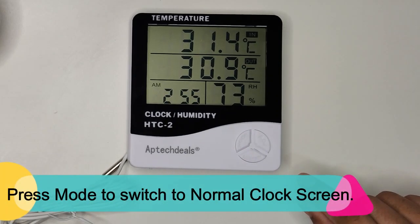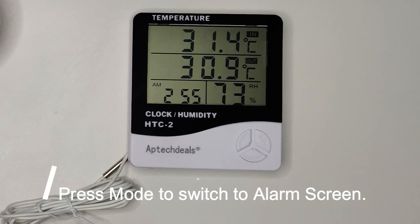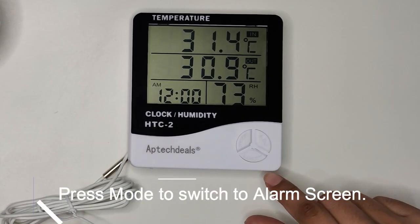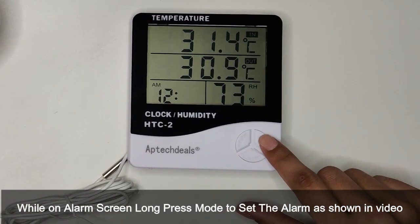Press mode to switch to the normal clock screen. Press mode to switch to the alarm screen. While on alarm screen, long press mode to set the alarm as shown in the video.